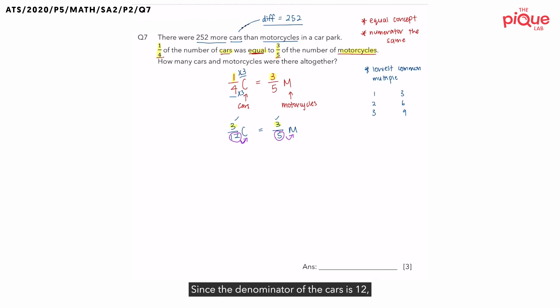Since the denominator of the cars is 12, that means that cars would have 12 units. Okay? What about for the motorcycles? Since the denominator of the motorcycles is 5, motorcycles would have a total of 5 units. Okay? How then do we move on from here?